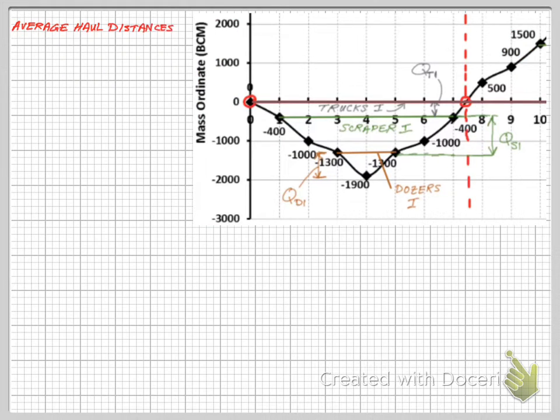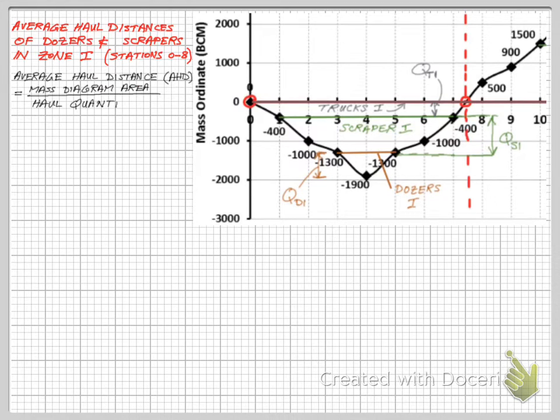Part C requires calculating the haul distances of the dozers and scrapers in zone 1. We know that the average haul distance is calculated by dividing the mass diagram area over the haul quantity.